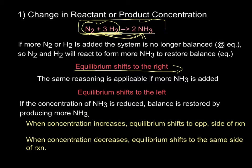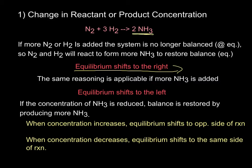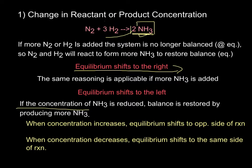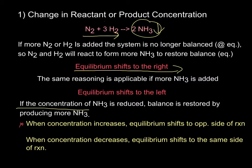The same reasoning applies if more NH3 is added — then we have a higher concentration of NH3 than our reactants, so NH3 is going to decompose and form more reactants, restoring the balance. Now, if the concentration of NH3 is reduced, balance is restored by producing more NH3. If that concentration goes down, more NH3 will have to be produced from the reactants. So when concentration increases, equilibrium shifts to the opposite side of the reaction, and when concentration decreases, equilibrium shifts to the same side of the reaction.